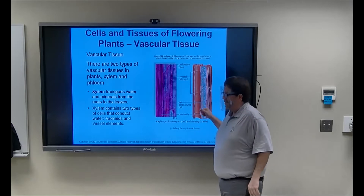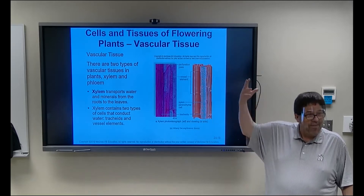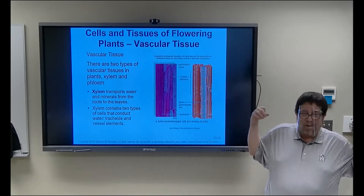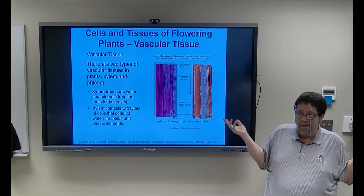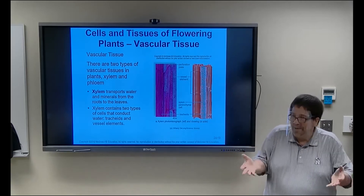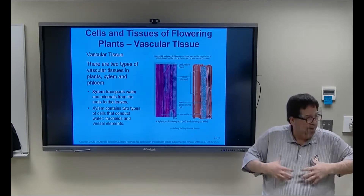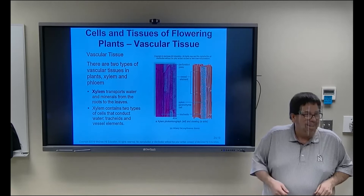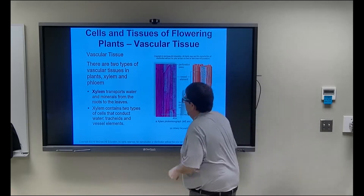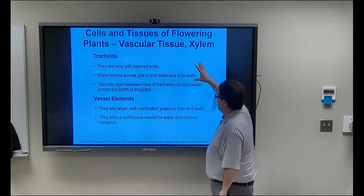This is called transpiration — evaporation of water at the leaf to pull the water up. A corn plant will transpire several liters a day. That's why it's so humid when you get down in a cornfield in July — they're throwing water out through the leaves, raising humidity from maybe 10% in the car to nearly 100% in the field. Xylem carries water up; tracheids and vessel elements are the two cell parts that make it.